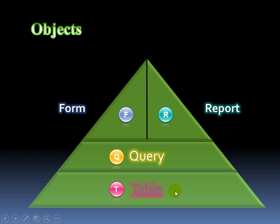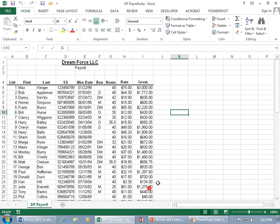Before we go any further, I strongly recommend that you watch our Microsoft Excel 2013 training videos, that is if you're not familiar with Excel. Because Access has a lot of similarities to Excel, except that Excel is more simplistic and is a great introduction to Access tables. I'm going to click on the link here to open up my Excel 2013 workbook and give you an introduction into tables. Access tables and this Excel spreadsheet are the same in that they have cells, and these cells make up a spreadsheet — or in Access, they would make up a table.